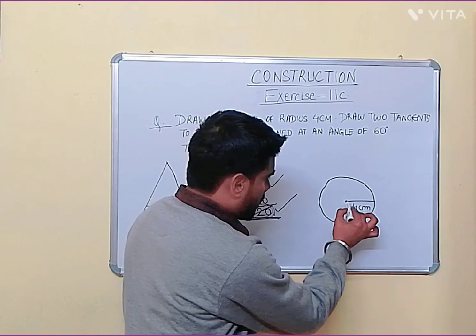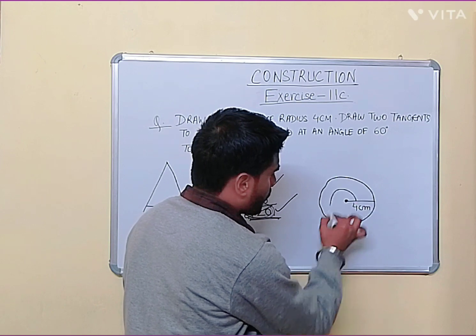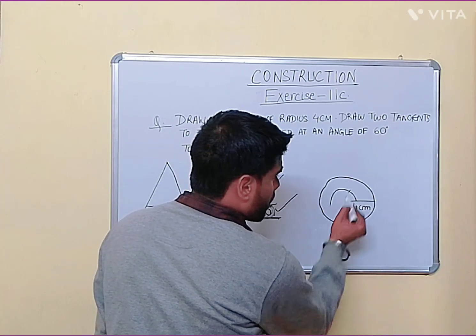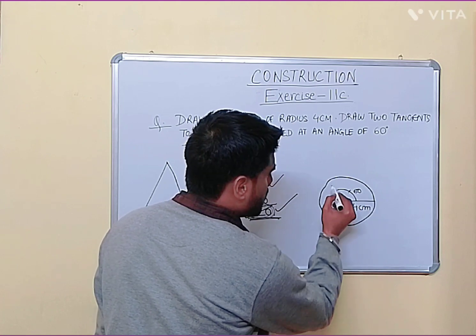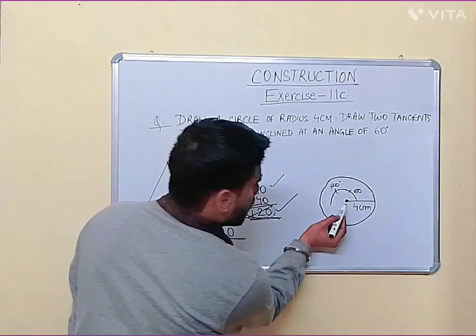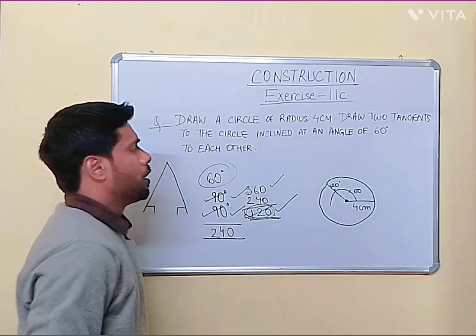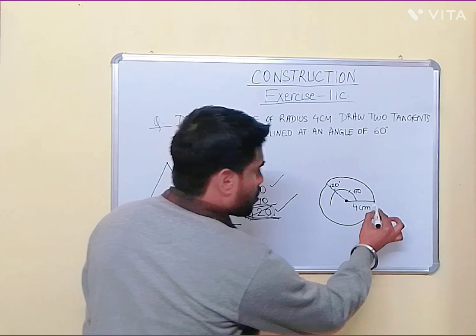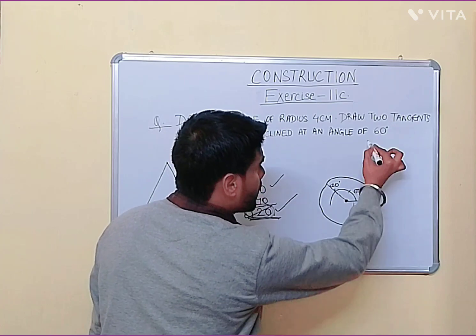To draw the 120 degree angle, take a compass, point it here, and draw an arc. Without changing the measurement, draw another arc from here — this one will be 60 degrees. Then from here again, this one will be 120 degrees. Join these two points together, making this angle 120 degrees. From each point on the circle, you also have to draw a tangent, and each will be 90 degrees.